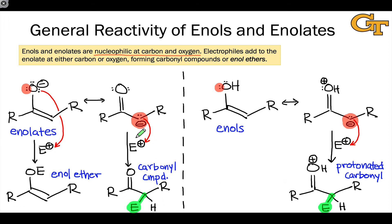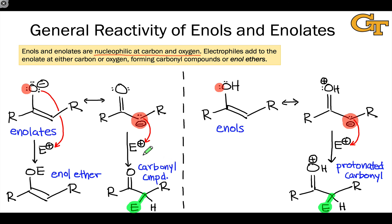The diversity of reactions of enols and enolates really comes from the structural diversity of the electrophile. As we look at specific reactions over the next several units, we'll see a variety of different electrophiles engaging with enols and enolates — halogens, alkyl halides, and even other carbonyl compounds will appear as electrophiles in reactions with these intermediates.